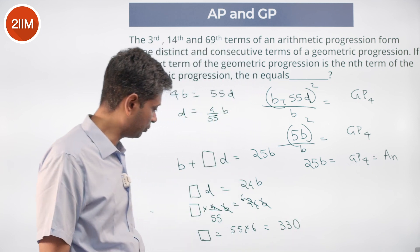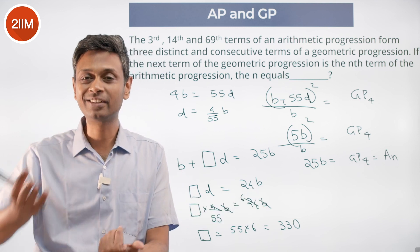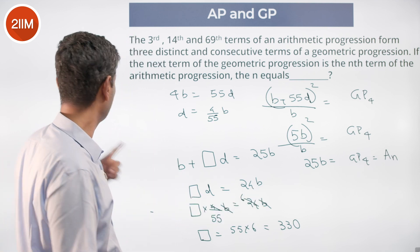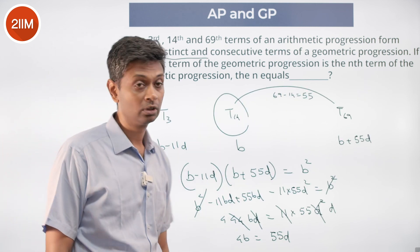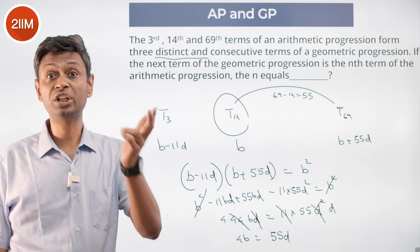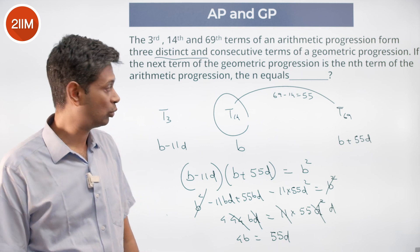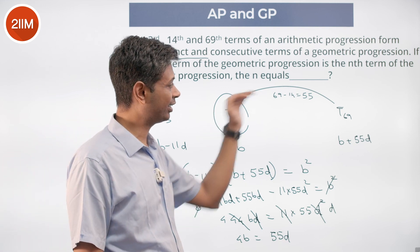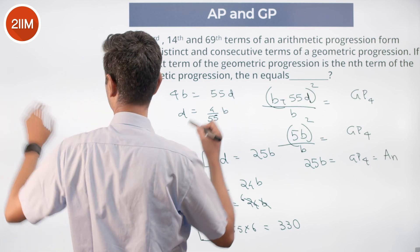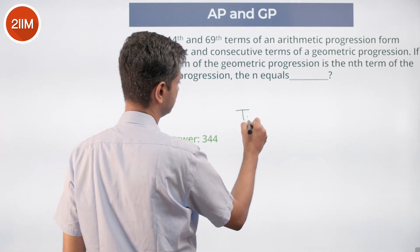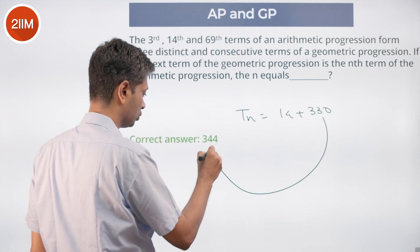So from b we add common difference 330 times to get the next term. It is brilliant. We need to remember that for us b is not the first term, it is the 14th term. From here we add 330 times common difference to get the next term. So what term are we looking for? The nth term is 14 plus 330 which is 344.